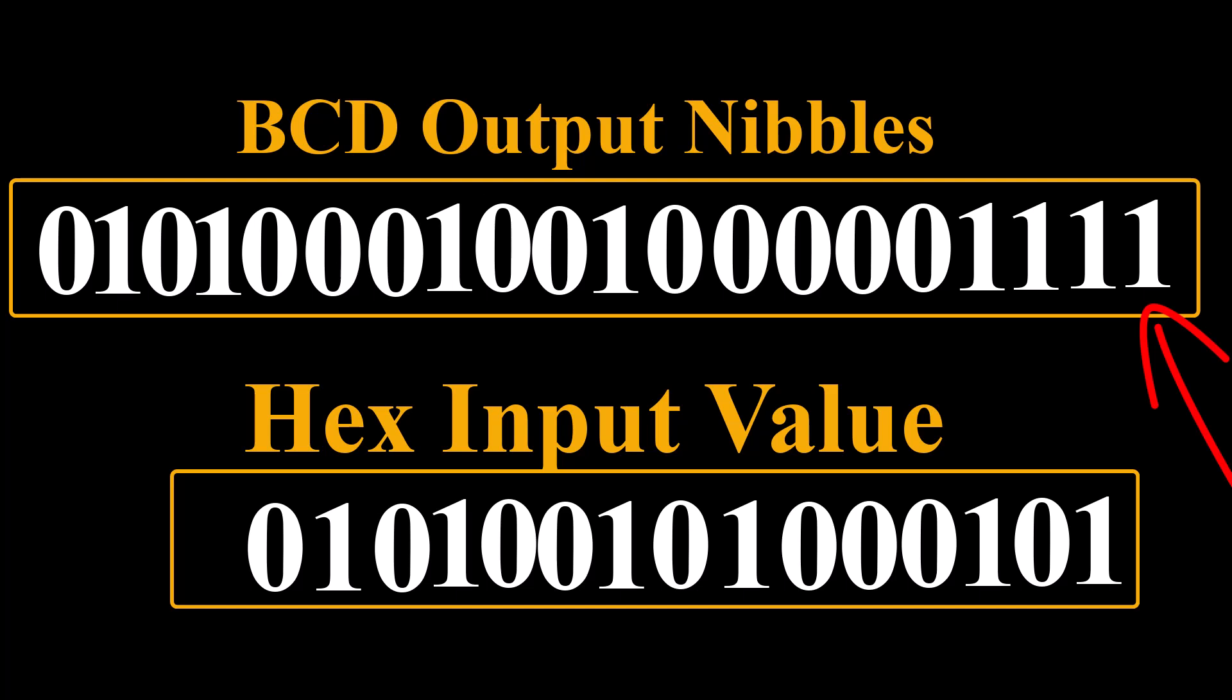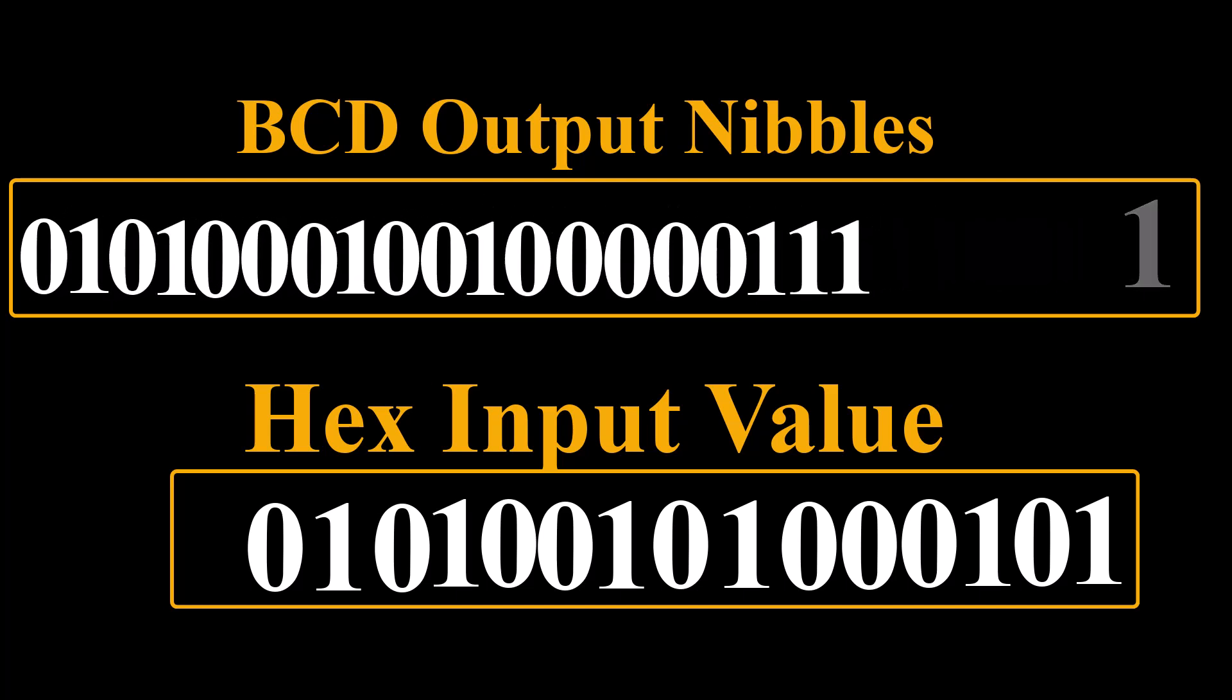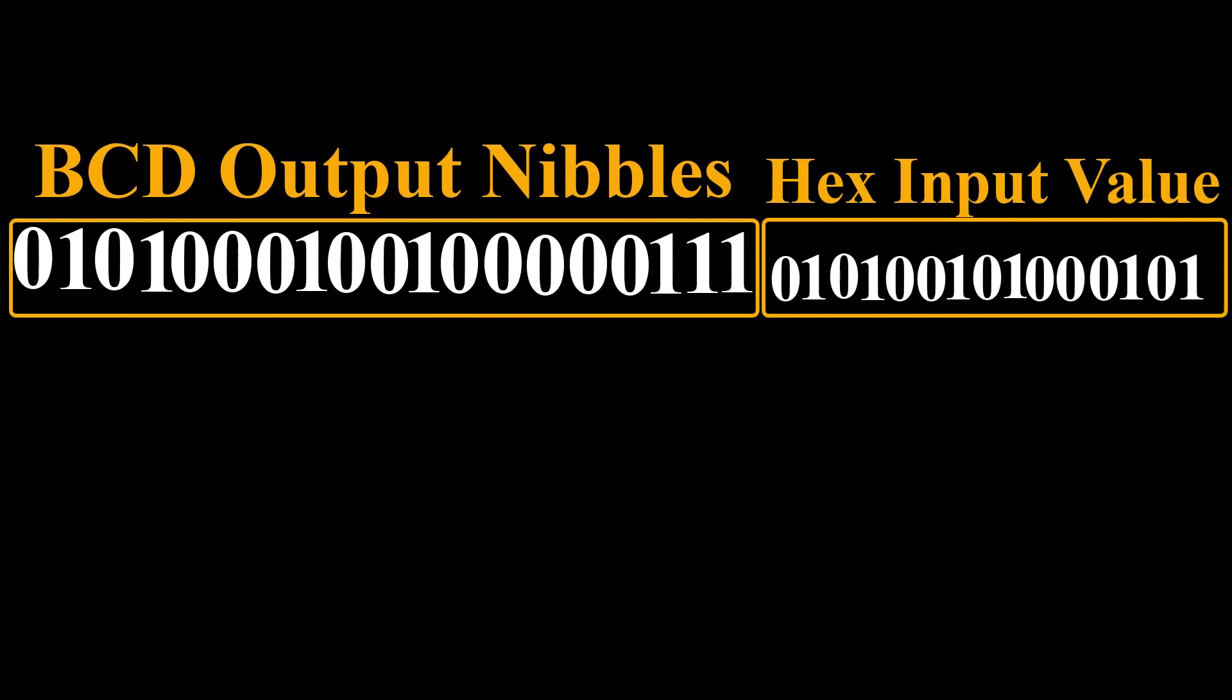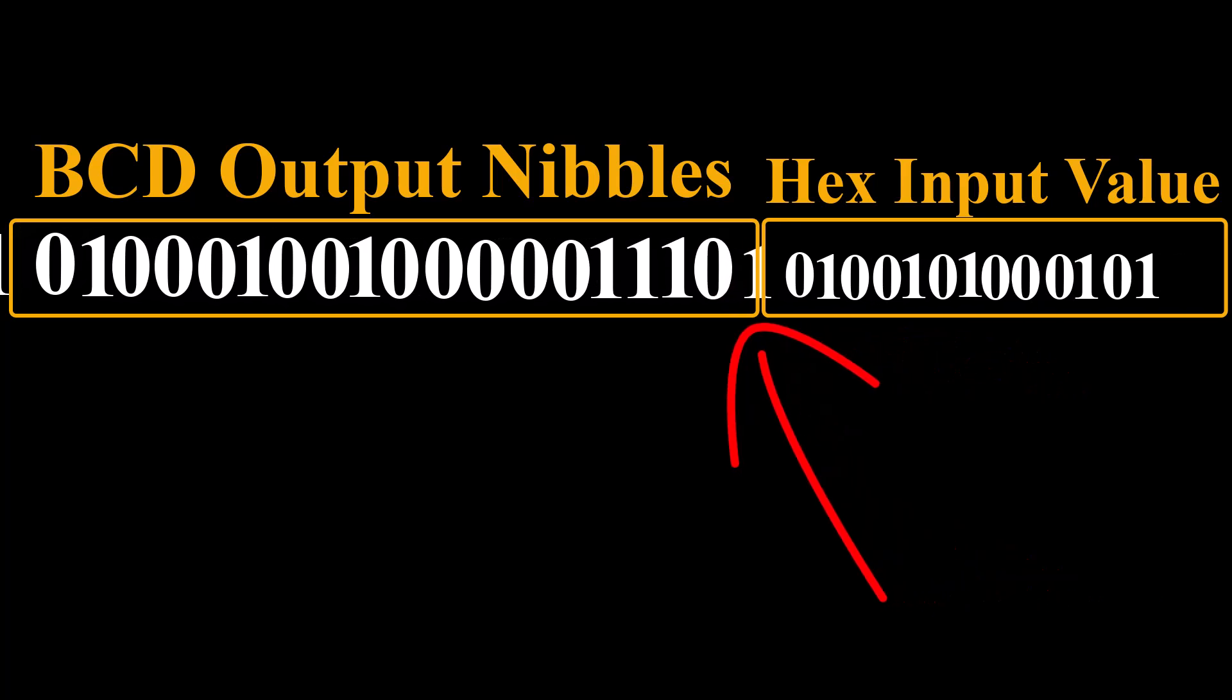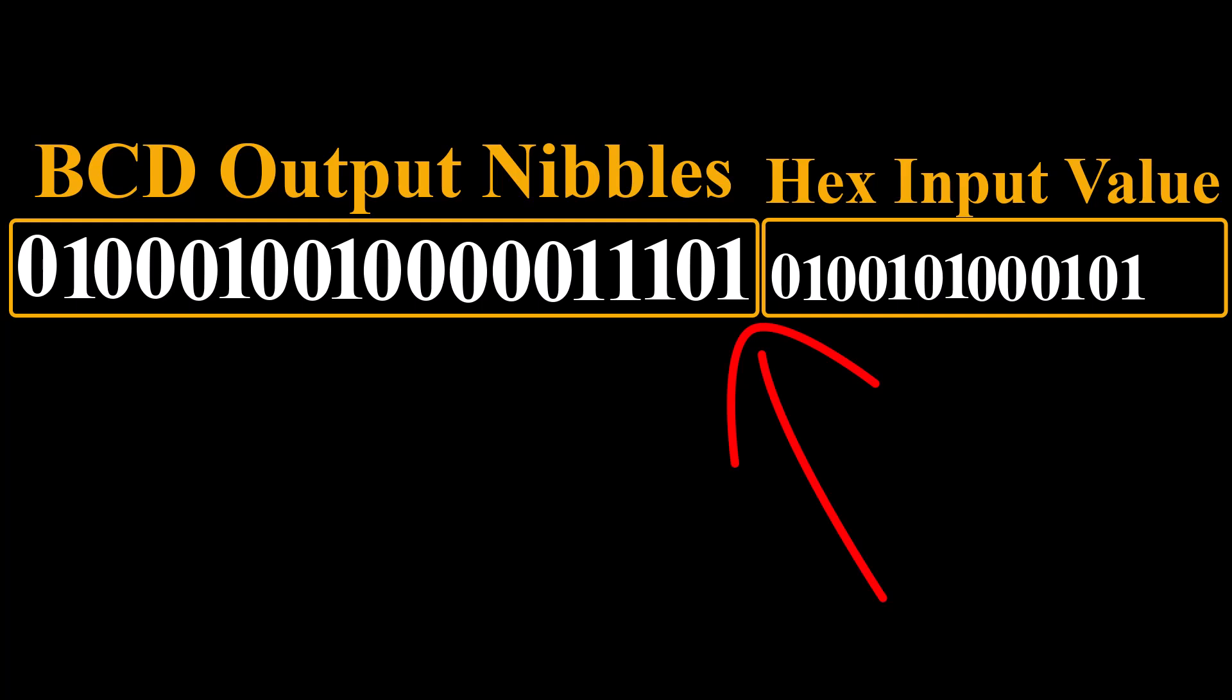Now, the way it works is this: in the double and add method, we only shifted the 16-bit input value. In the double dabble method, we're going to shift the three output bytes and the two input bytes as a single 40-bit register. Bits shifting out of the input word, which are going to be on the least significant end of the 40-bit register, bits shifting out of the input word are going to be shifted into the least significant nibble of the output word.